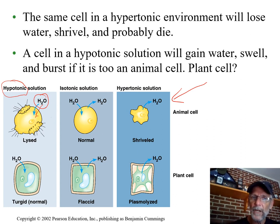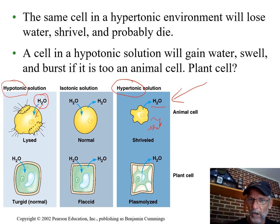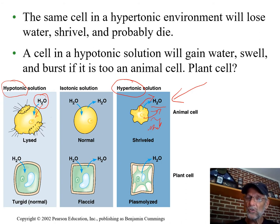What if the cell is surrounded by a solution with lots of concentration of solute? That means there's much less water than inside the cell. Water is going to diffuse out of the cell. It's going to shrivel up, and if it gets too dehydrated, its chemistry will be messed up enough to where it may die.